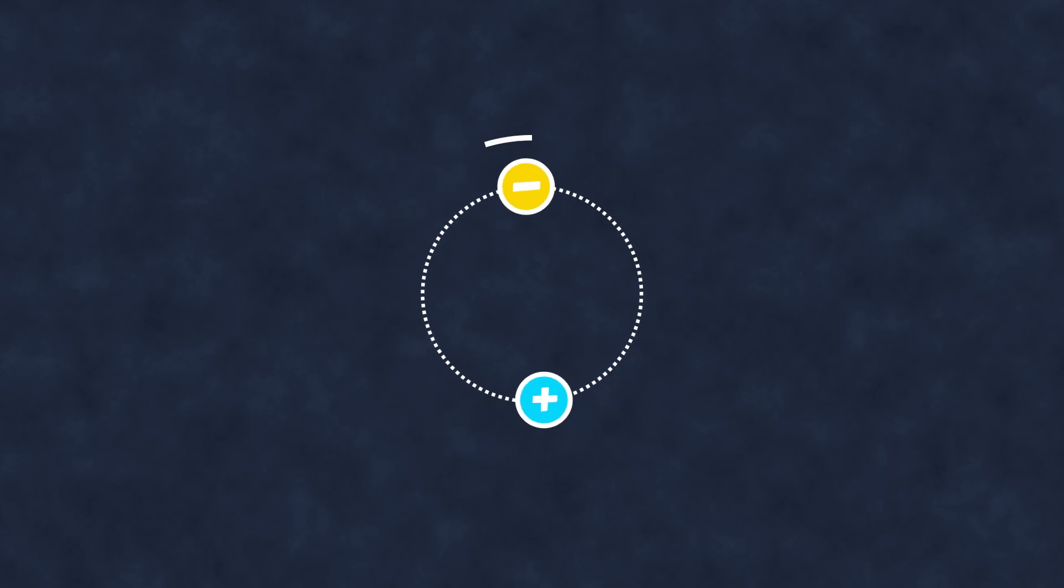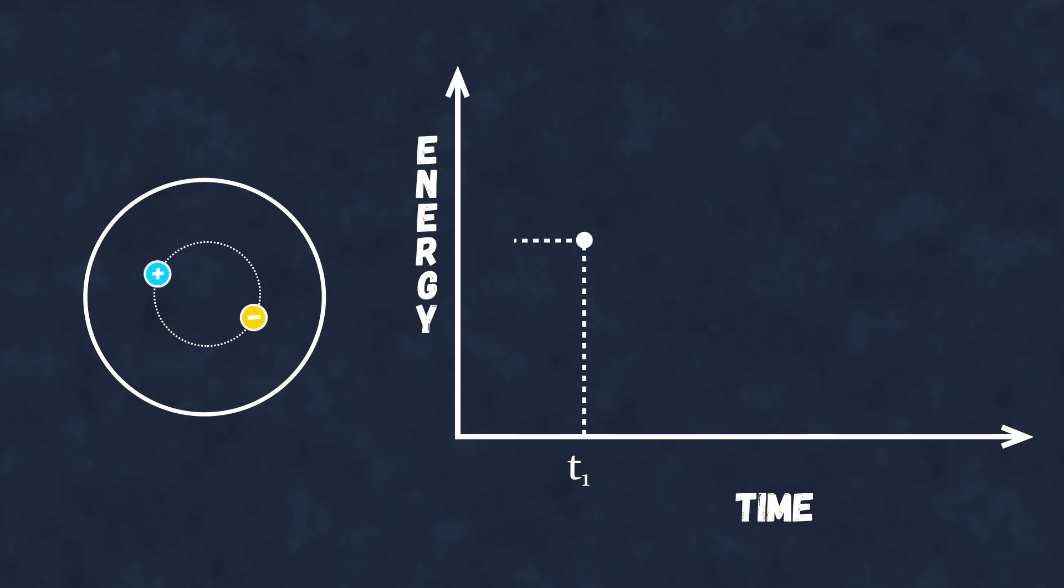Moreover, if we isolate our positronium, preventing it from interacting with anything else, the law of conservation of energy allows us to assume that this energy will remain constant. Thus, once we measure the energy of this system and ensure it's free from external influences, we can expect it to maintain this energy indefinitely, with any measurement yielding the same value.